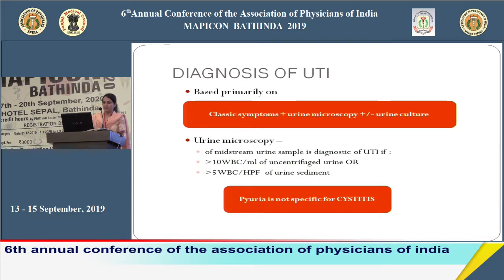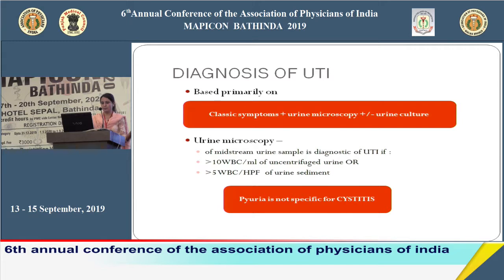Diagnosis of UTI is very simple. It is based on classic symptoms with the help of urine microscopy; urine culture is not always required. A patient with classic symptoms of UTI and urine microscopy revealing more than 10 WBCs per ml of uncentrifuged urine, or more than 5 WBCs per high power field of urine sediment, is sufficient for diagnosis. Pyuria is not always specific for cystitis — other causes of pyuria will be discussed later.